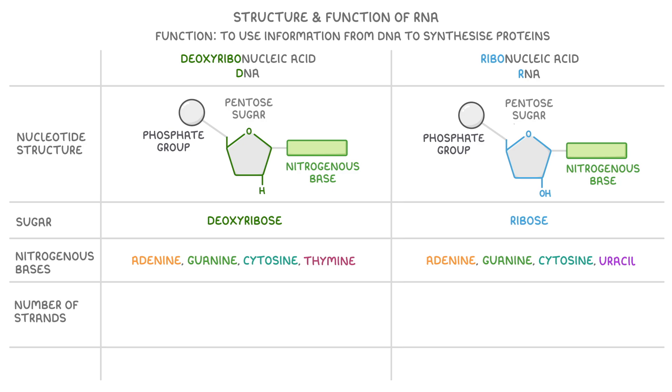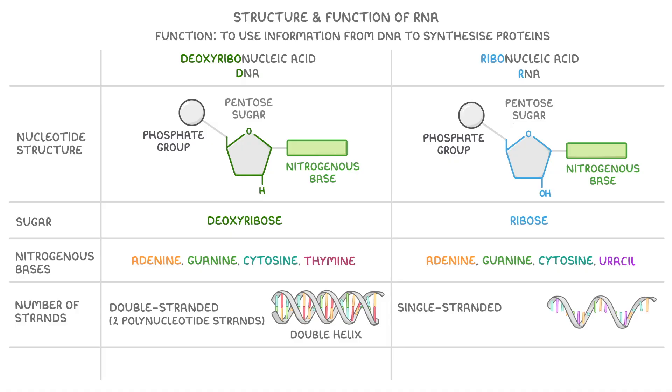And if we take a look at the number of strands these molecules contain, DNA is usually double-stranded and the two polynucleotide strands wrap around each other to form a double helix. RNA, by comparison, is single-stranded though, and so is only made up of one polynucleotide strand.